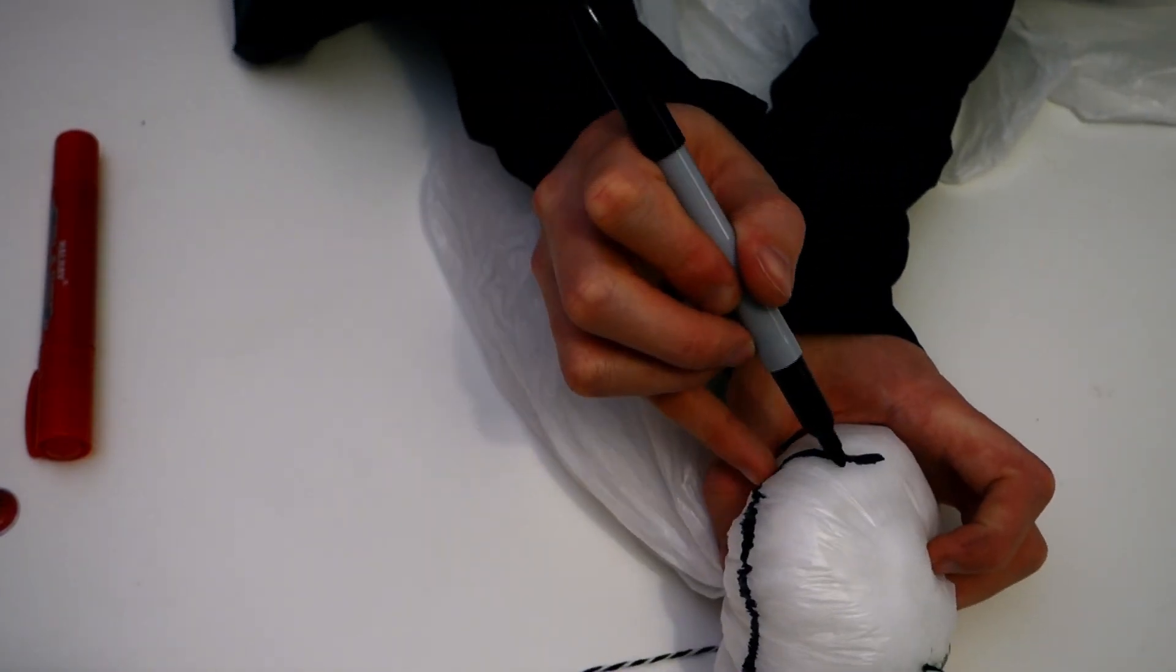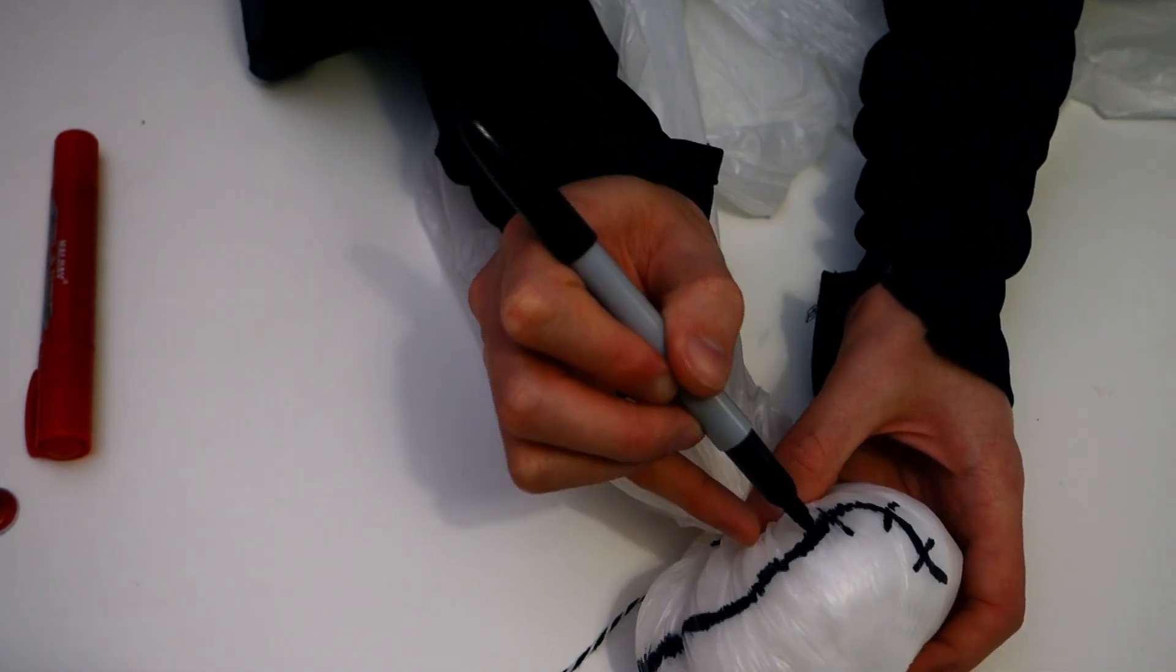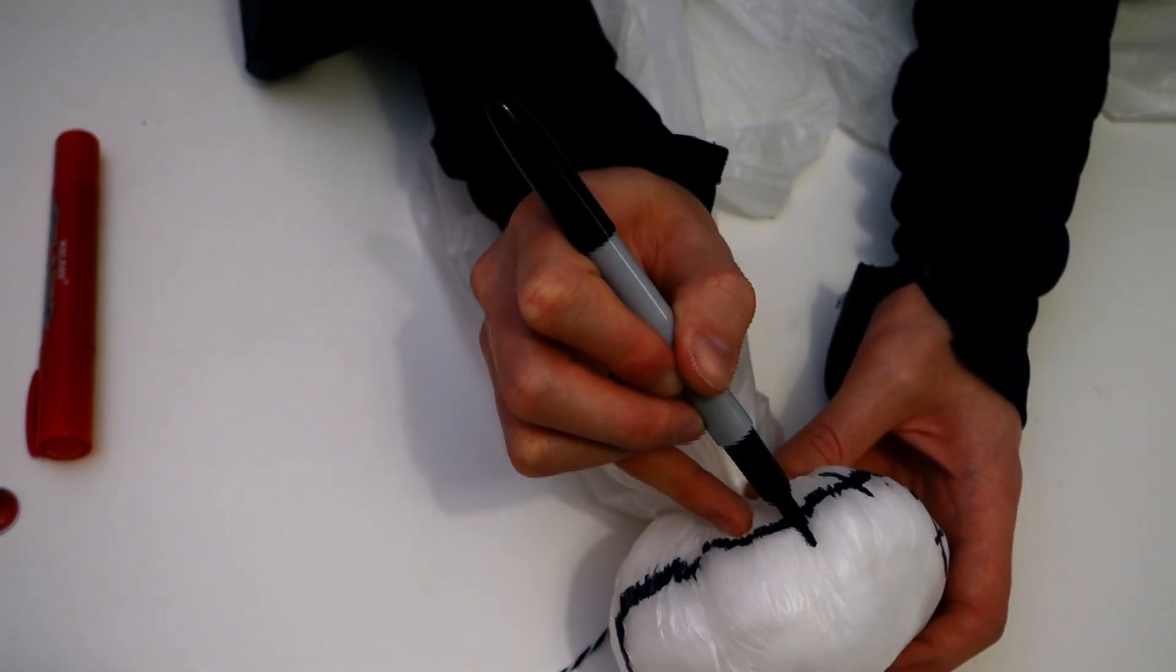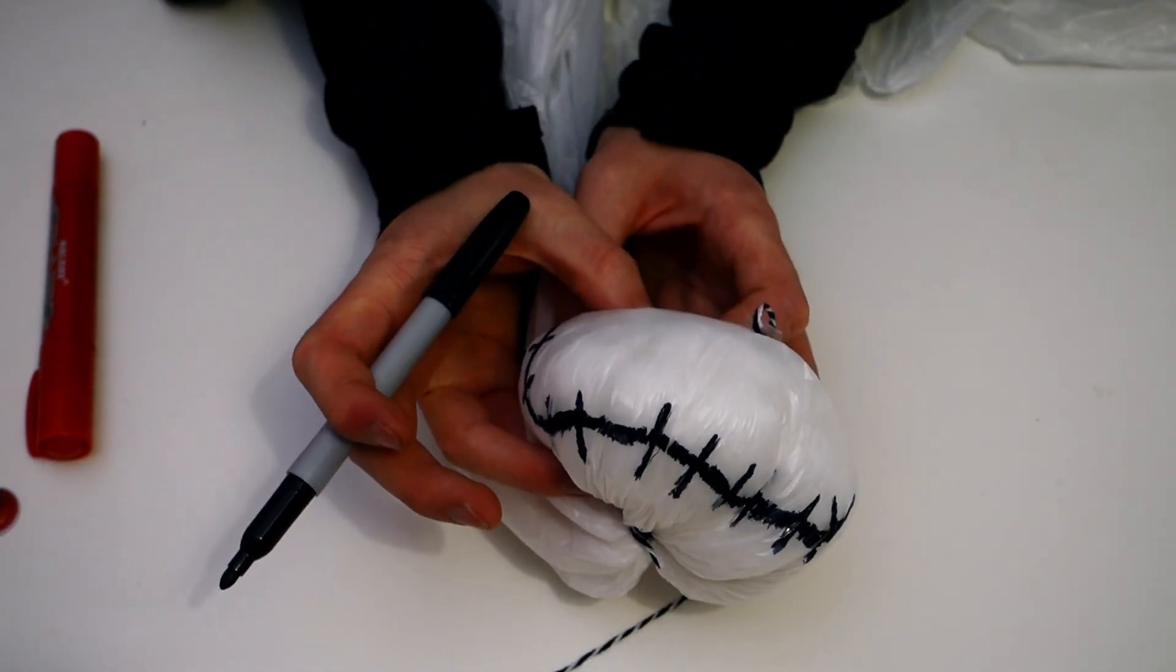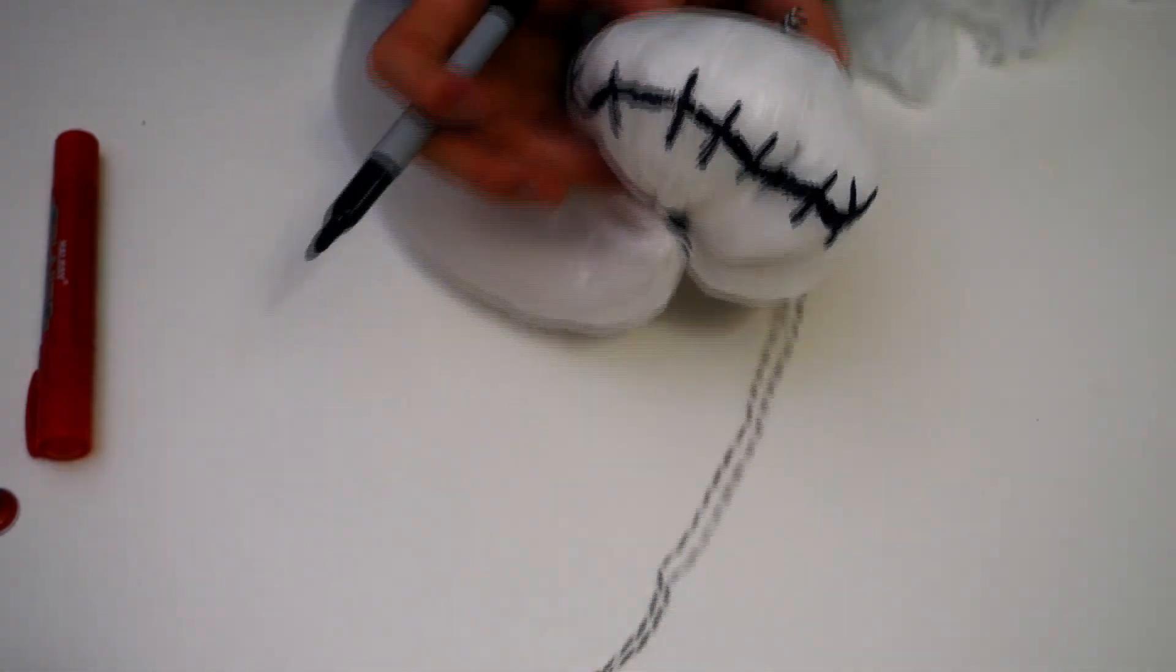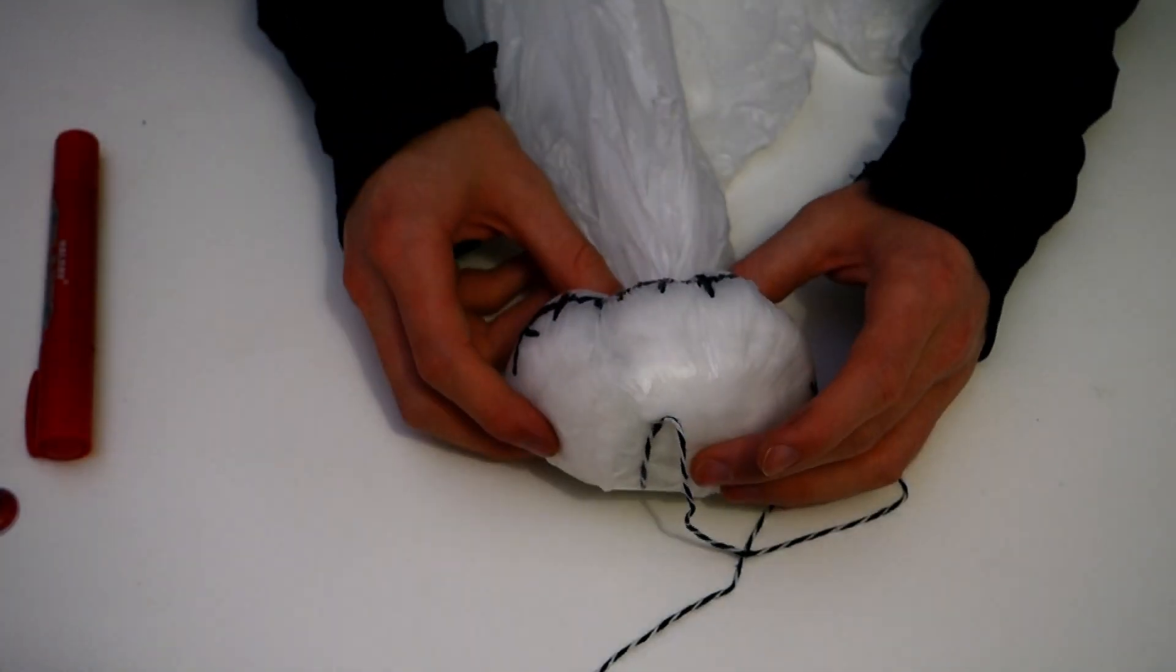And then we can do it like stitches going across the top. Like that. Very scary. Terrifying. So we're going to put our pen to one side and next we're going to do the eyes.